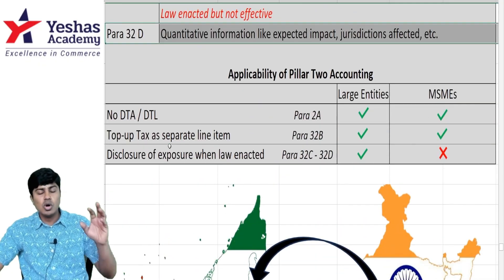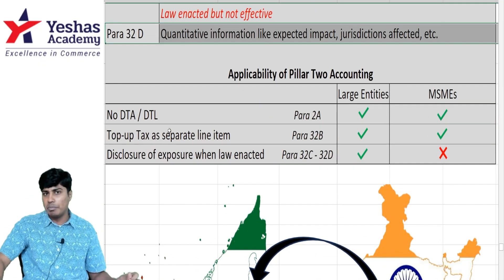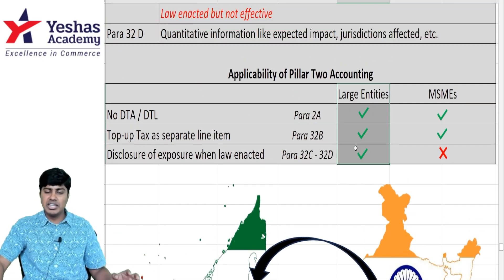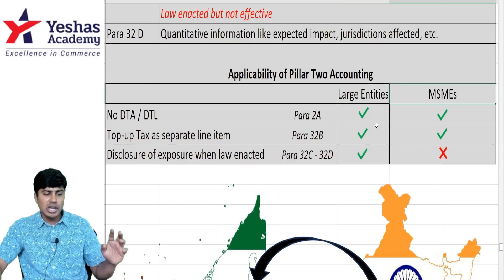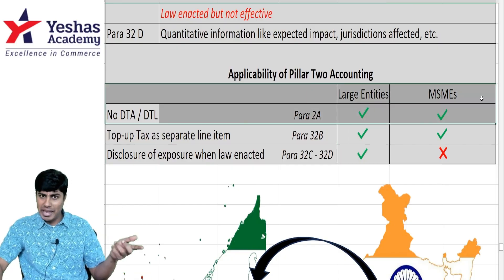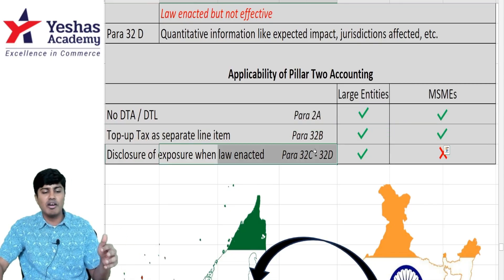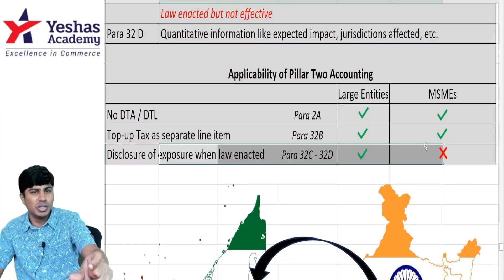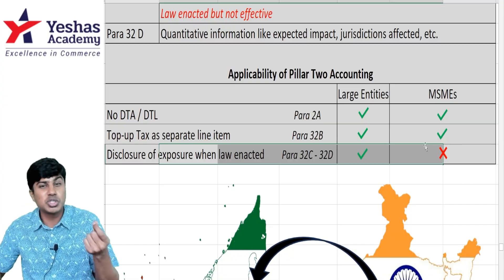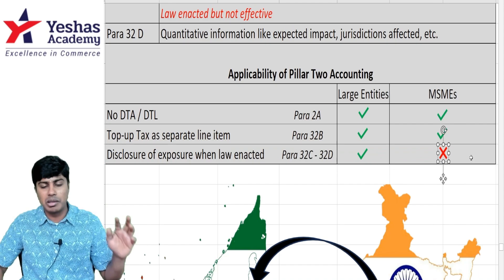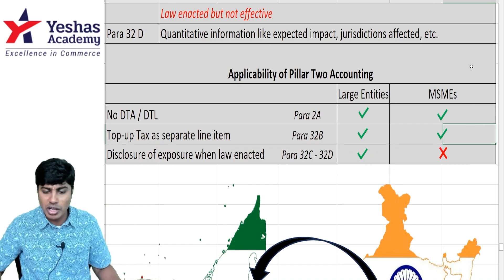Regarding applicability: everything applies to large entities. For MSMEs, only the no-DTA/DTL rule (para 32A) and top-up tax as a separate line item are applicable. The detailed quantitative and qualitative disclosures in para 32C and 32D are applicable only for large entities, not for MSMEs.